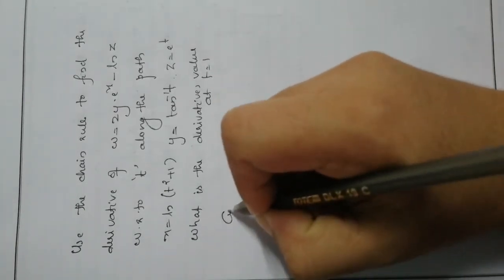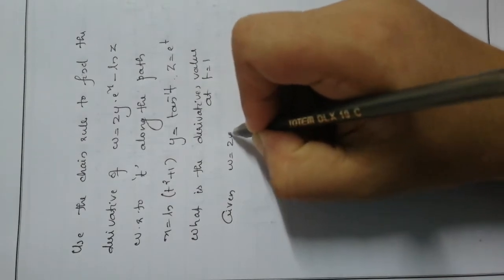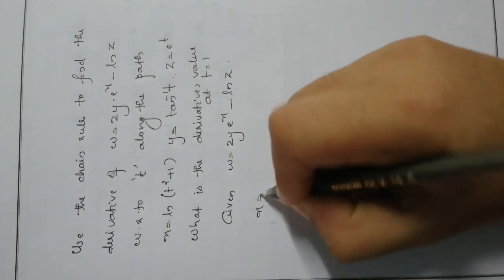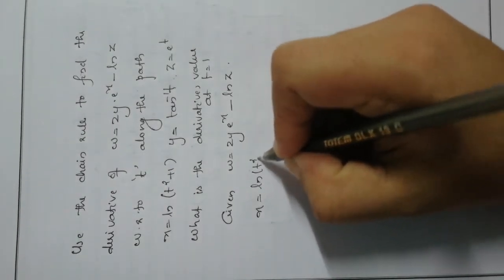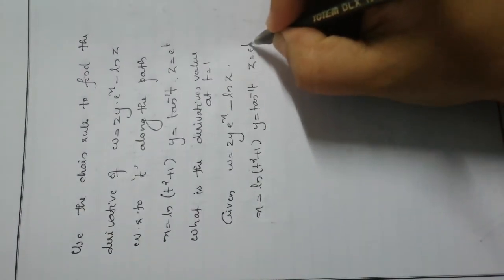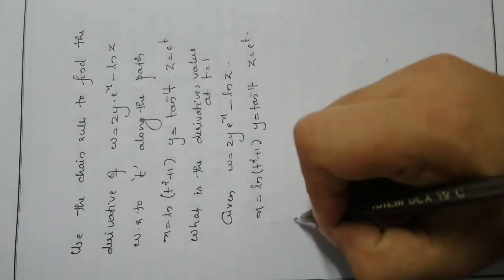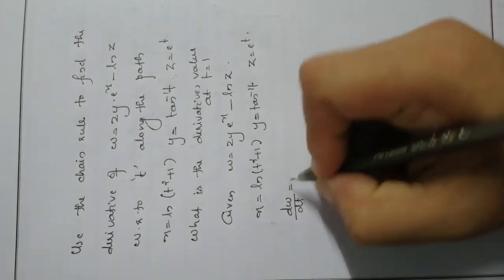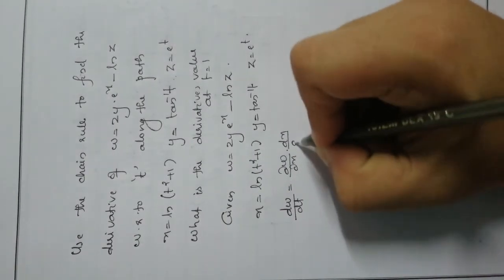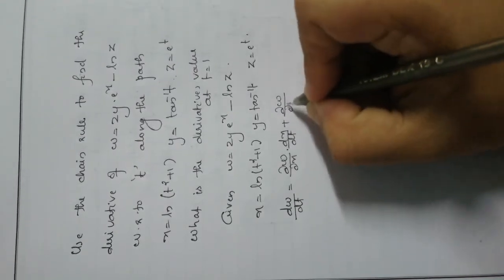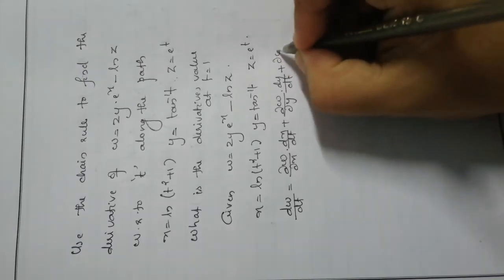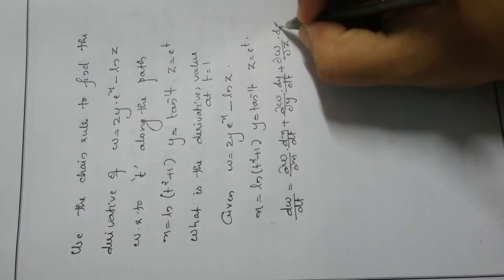Given: w = 2y·e^x − ln(z), x = ln(t² + 1), y = tan⁻¹(t), z = e^t. Then by the chain rule: dw/dt = (∂w/∂x)(dx/dt) + (∂w/∂y)(dy/dt) + (∂w/∂z)(dz/dt).